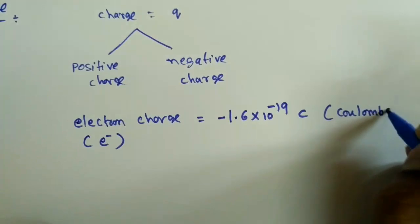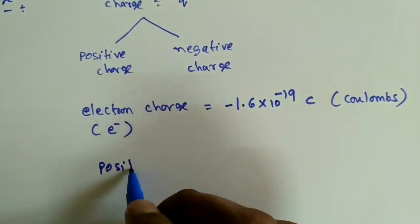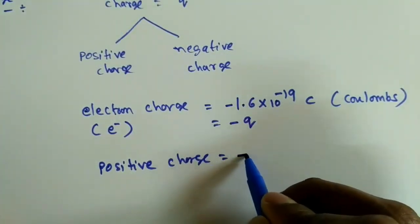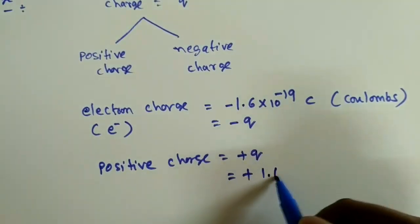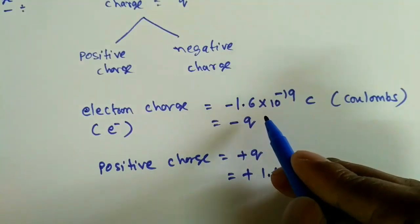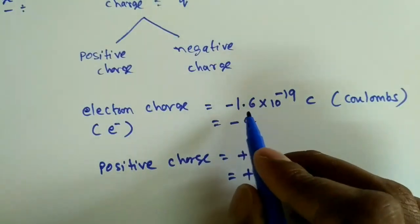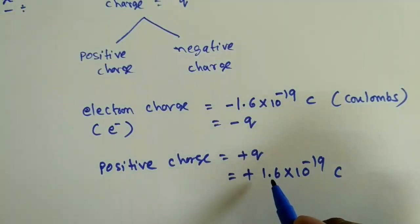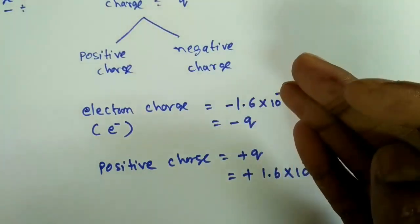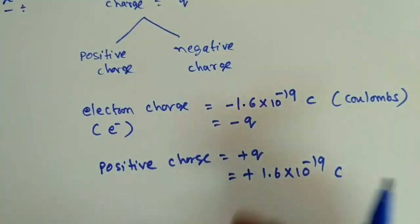The positive charge is just the opposite of the electron charge. The electron charge can be represented as minus Q, and the positive charge as plus Q, or plus 1.6 × 10⁻¹⁹ coulombs. Remember: if it is an electron charge, use minus Q or minus 1.6 × 10⁻¹⁹ coulombs; if it is a positive charge, use plus 1.6 × 10⁻¹⁹ coulombs. Whenever you find Q in an expression involving electrons, replace it with minus 1.6 × 10⁻¹⁹ coulombs.